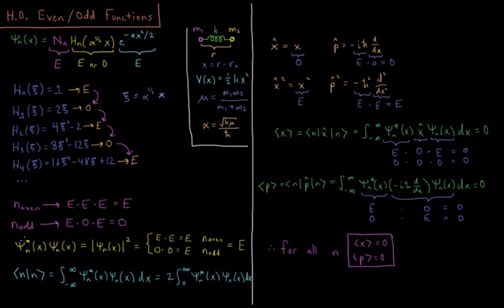So what about psi star psi? So psi star psi, or the magnitude of the wave function squared, that's equal to even times even, or odd times odd, both of which end up giving you an even function. So the probability density for every harmonic oscillator wave function always gives an even function.